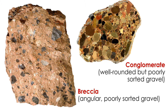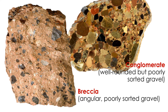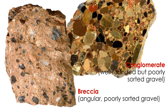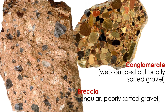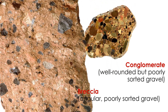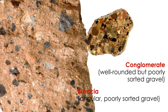In both cases the rocks are poorly sorted; the largest clasts are pebble or cobble sized. The only difference between a breccia and a conglomerate is the shape of the clasts. Conglomerate clasts are well rounded, whereas breccia clasts are angular in shape.